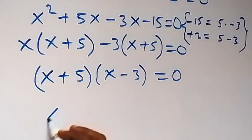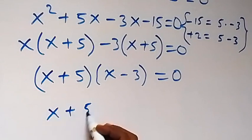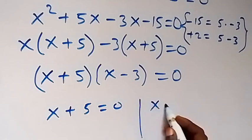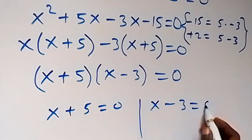Then the two cases here, we have x plus 5 equals to 0 or we have x minus 3 equals to 0.